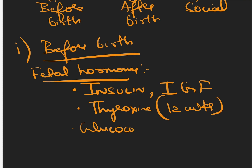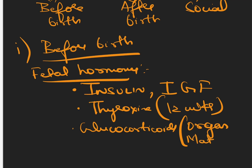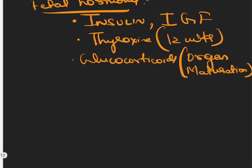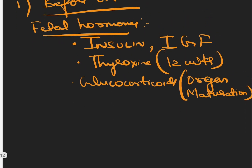Glucocorticoids help in organ maturation, like liver and lungs. That is why we give intrauterine steroids to the mother to improve organ maturation in pre-term babies.